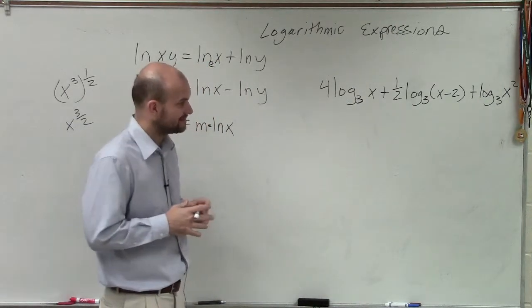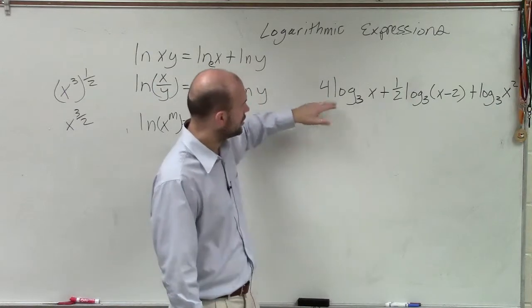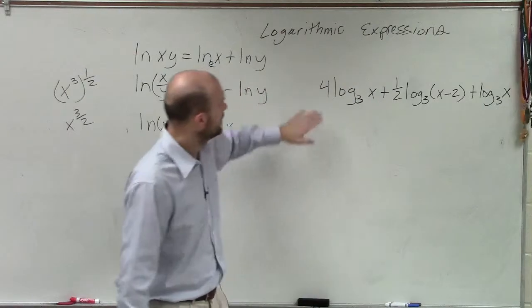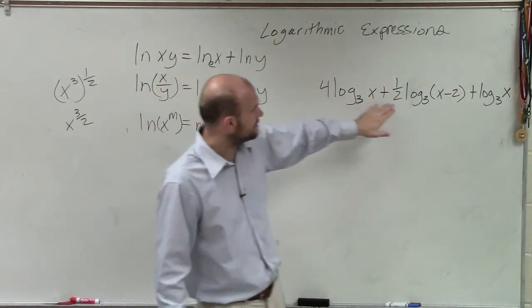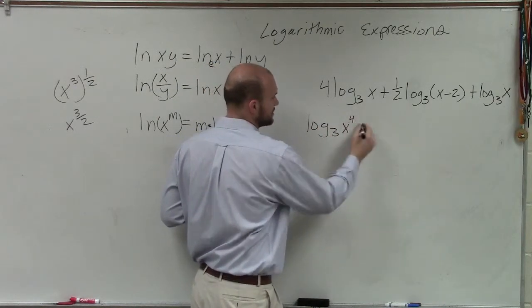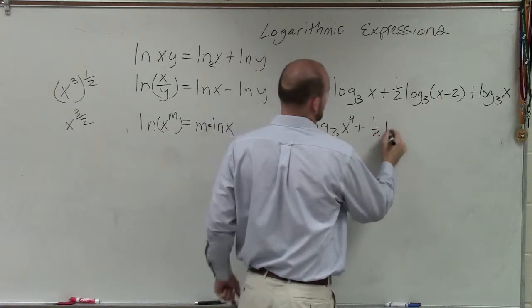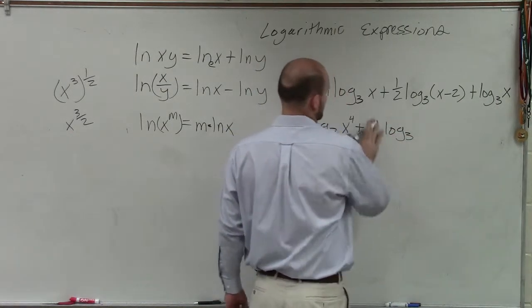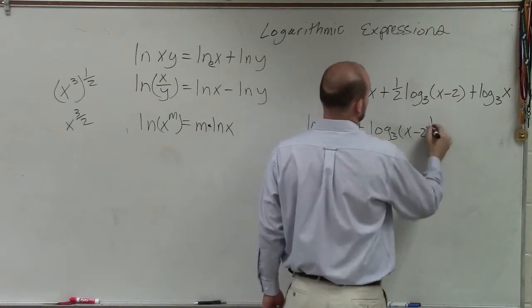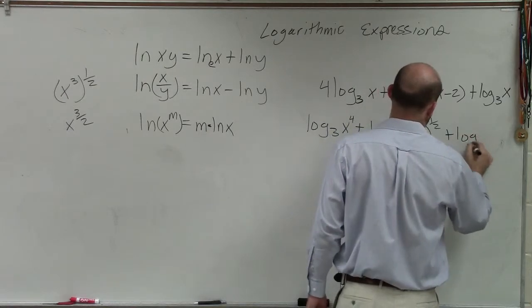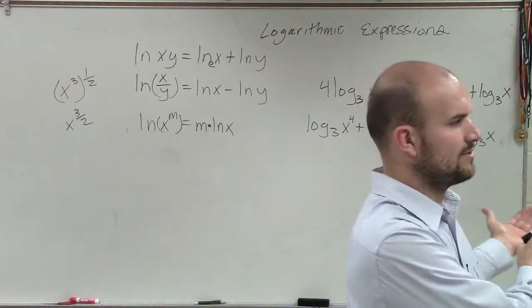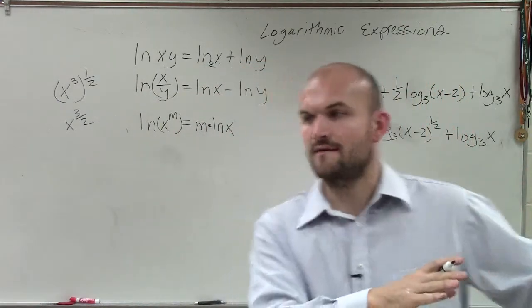So the first thing when condensing is I want to be able to take all of my terms, and actually, I'm just going to leave that x squared off. Let's not worry about it. If I was leaving this, what I'm going to do is bring up the powers first. So now I have log base 3 of x to the fourth plus 1 half log base 3 of x minus 2 to the 1 half plus log base 3 of x. Does everyone understand what I did? I took all the numbers that are in front, and I threw them back up to their powers. Does everybody understand that?